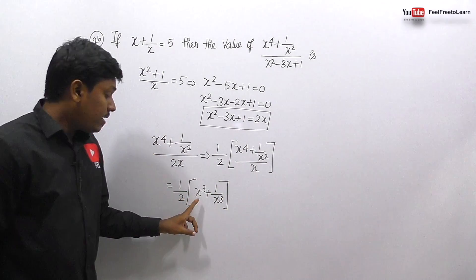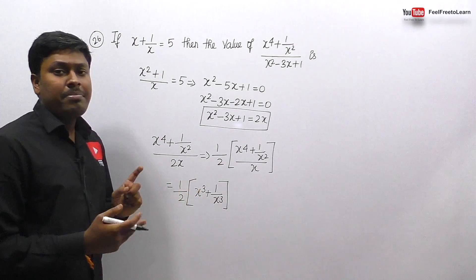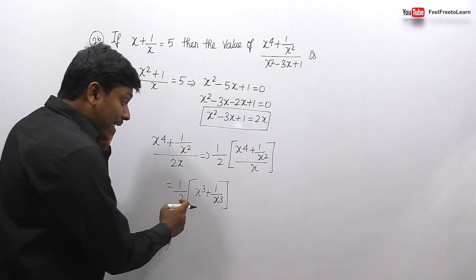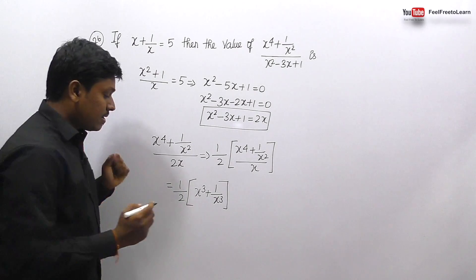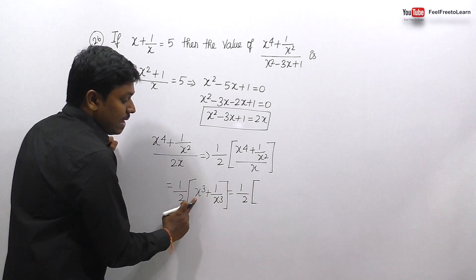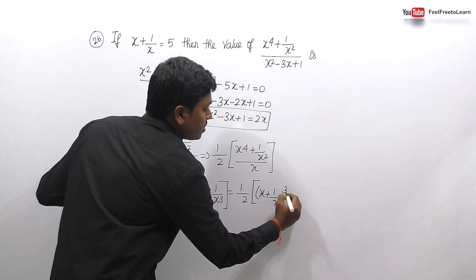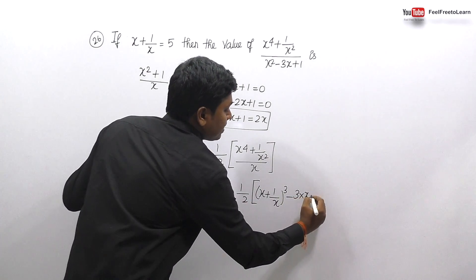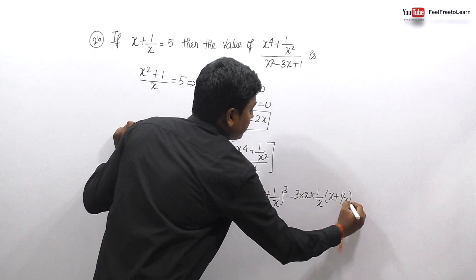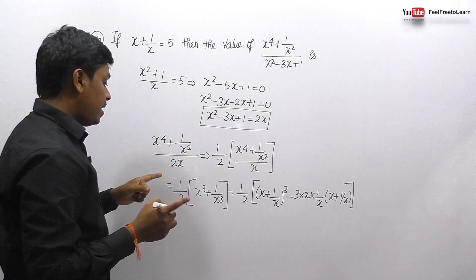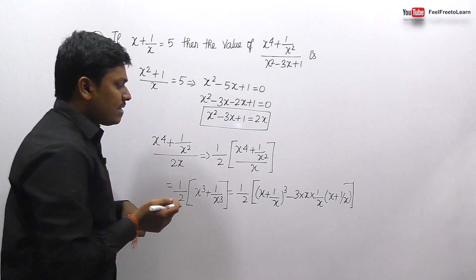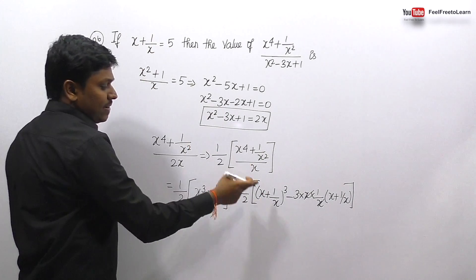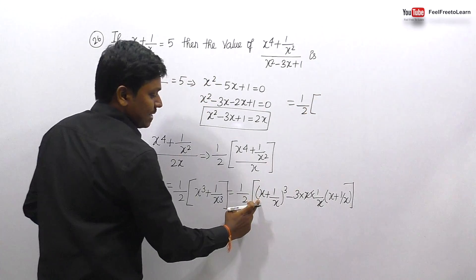Applying the formula with a = x, b = 1/x: a³ + b³ = (x + 1/x)³ - 3·(x · 1/x)·(x + 1/x). Note that x · (1/x) = 1, so this simplifies to (x + 1/x)³ - 3(x + 1/x). Substituting x + 1/x = 5: = 5³ - 3(5) = 125 - 15 = 110. So the full expression = (1/2) × 110 = 55.